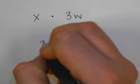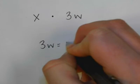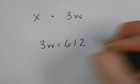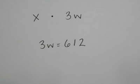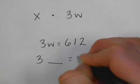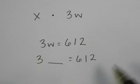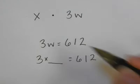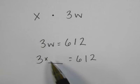So for this example, 3w is equal to 612. First thing that they would do, as always, is rewrite it and put a blank. Now the problem with this is there is no symbol. So they also need to put in that it's a times problem. 3 times blank equals 612.